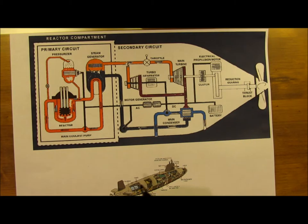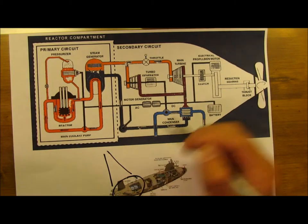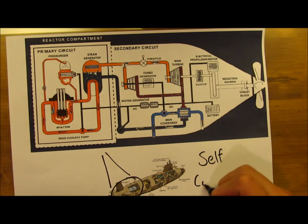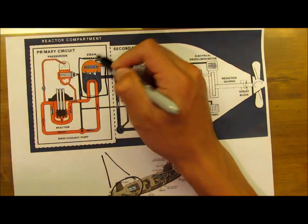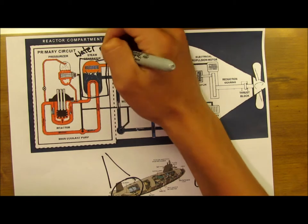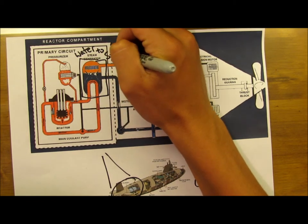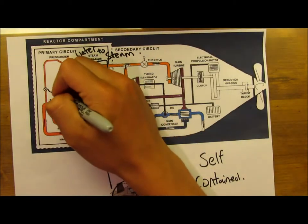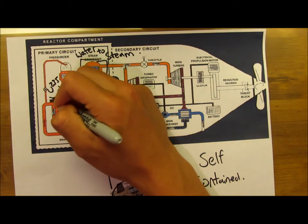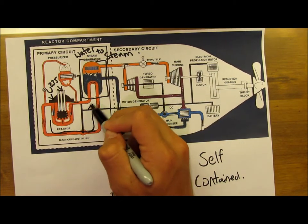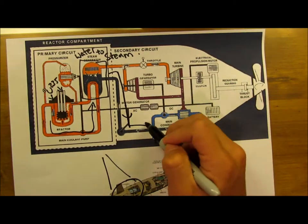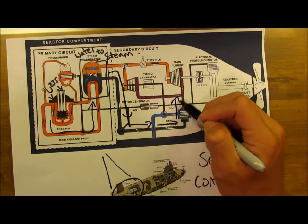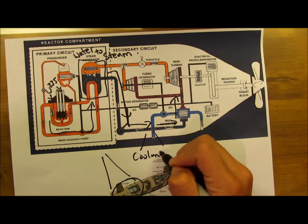A nuclear reactor is a device to initiate and control a sustained nuclear reaction. The most common use is for the generation of electrical energy. There is a container of water that uranium-235 is released into, and when a neutron is added, the uranium atom splits up and creates energy, following E equals mc squared, and heats up the water.